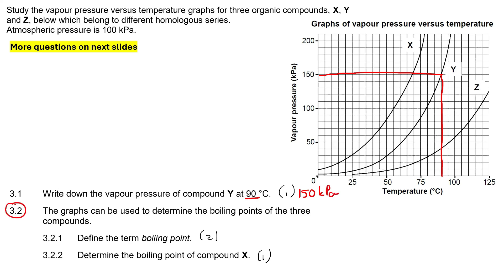The graphs can be used to determine the boiling points of the three compounds. Define the term boiling point. The simple answer is it is the temperature where a liquid starts turning into a gas, but that is not the technical definition. Let me explain how to get the technical definition.